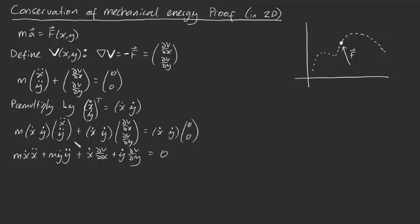Now, this whole expression can be simplified a little bit more. Notice that this term here is actually just d dt of a half m x dot squared. Likewise, this term here is just d dt of a half m y dot squared. Let me clean that up, that looks a bit messy. y dot squared, like that.